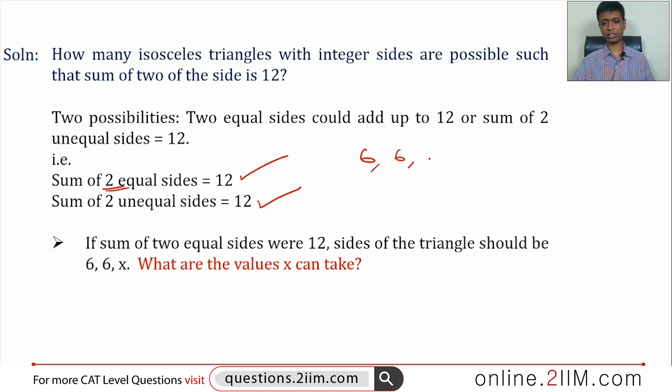Let's first start with two equal sides being 12. So sides of a triangle, let it be 6, 6, x. X has to be an integer. So let's try values 6, 6, 1; 6, 6, 2; 6, 6, 3 and keep on going. Is 6, 6, 1 a triangle? What is the rule we are verifying?